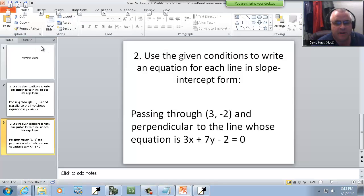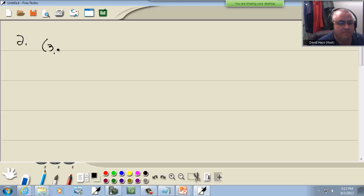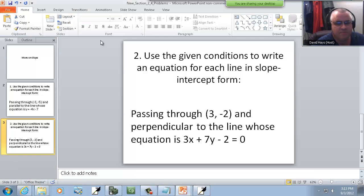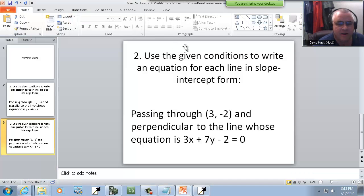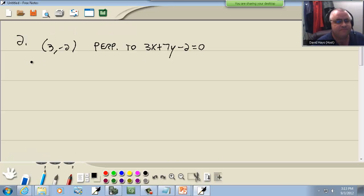Passes through (3, -2) and it's perpendicular to 3X plus 7Y minus 2 equals 0. Still the same instructions: find the equation of the line. So step 1, find M, and the first sub-step within that: write the given line in slope-intercept form.